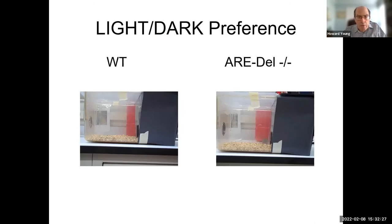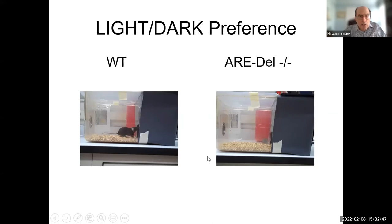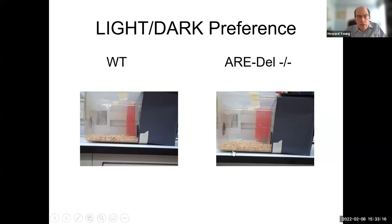There's one other thing I want to show about the mice: the light-dark preference. The wild-type mouse comes out of the dark area and really keeps exploring the light area extensively. The ARE-DEL mouse eventually comes out but immediately heads back into the darkness. We think there are also behavioral difficulties — we haven't been able to do much on brain chemistry yet, but we think interferon gamma is impacting the brain and affecting the light-dark preference as well as other functions.